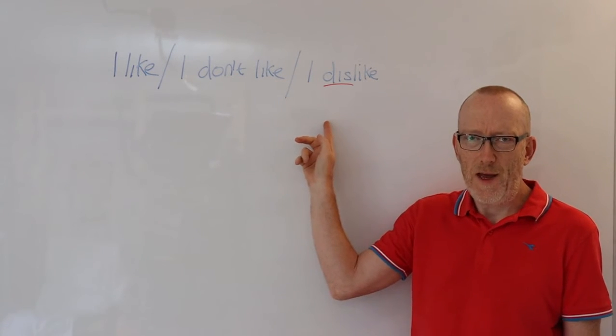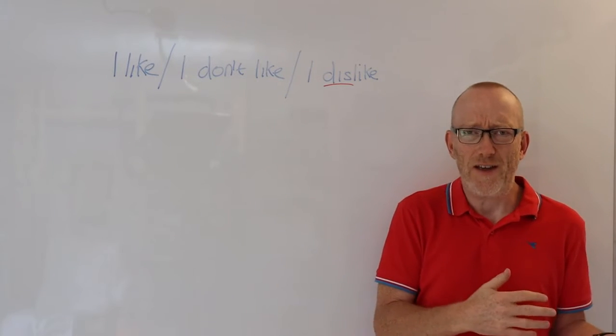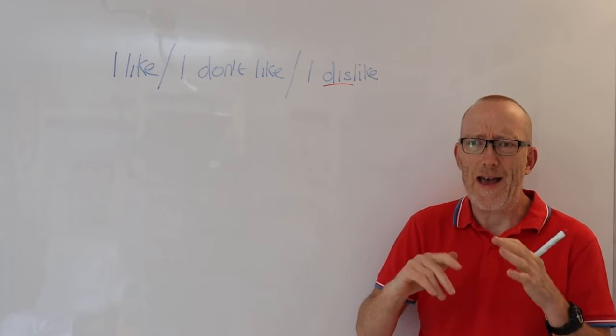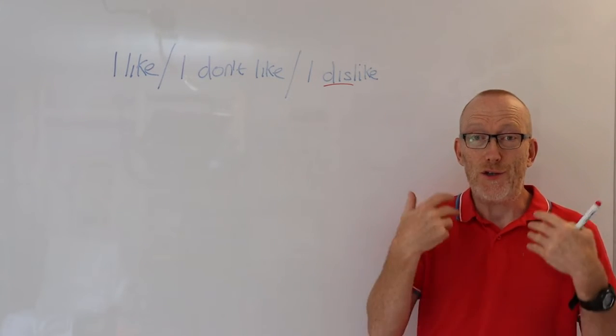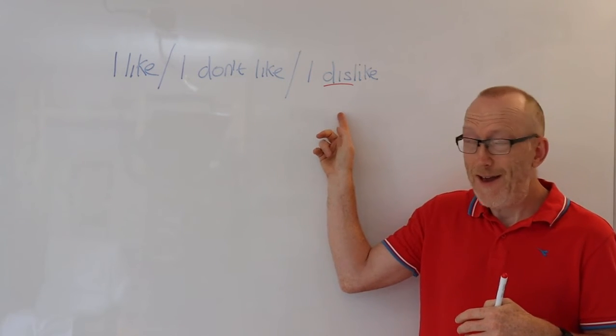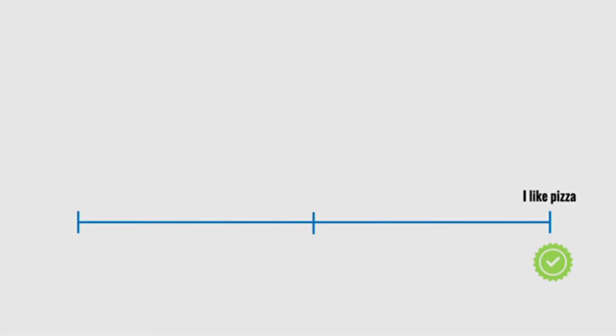If you dislike something, you're definitely not just sort of 50-50. If I dislike something, I actively do my best to not go anywhere near it. So it's much, much stronger. Now, what we can do is we can put like, don't like and dislike onto a scale, just to show you exactly what I mean by this.